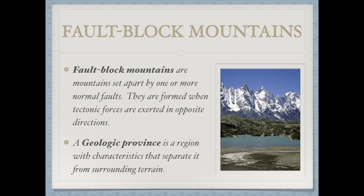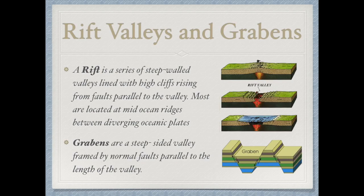Fault block mountains are specifically found at faults when you have one or more normal faults, creating jagged apexes and jagged peaks when tectonic forces are exerted in different and opposite directions — it's a region with characteristics that separate it from the surrounding terrain. A rift is a steep-walled valley that usually happens at divergence, often at mid-oceanic ridges. Grabens are pieces that look like little triangles either being pushed up or dropping down between different areas of a normal fault.